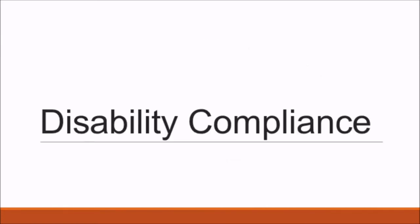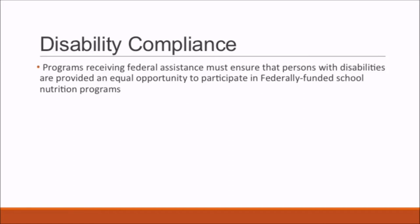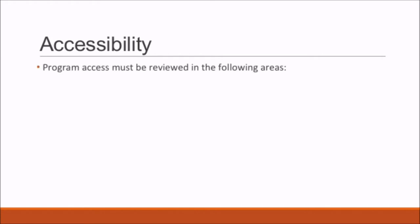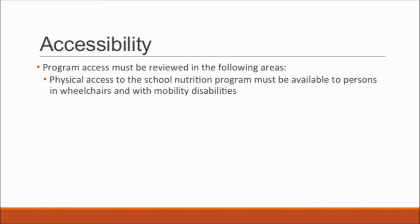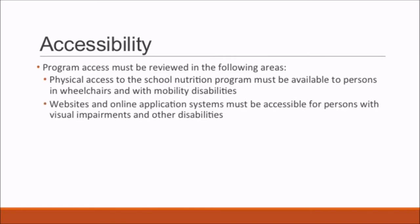Disability Compliance. Programs receiving federal assistance must ensure that persons with disabilities are provided an equal opportunity to participate in federally funded school nutrition programs. The two areas of focus are access and communication. Accessibility to the school nutrition program must be provided to all applicants, participants, and potential participants, with program access reviewed in the following areas: physical access for persons in wheelchairs and with mobility disabilities, and website and online application accessibility for persons with visual impairments and other disabilities.